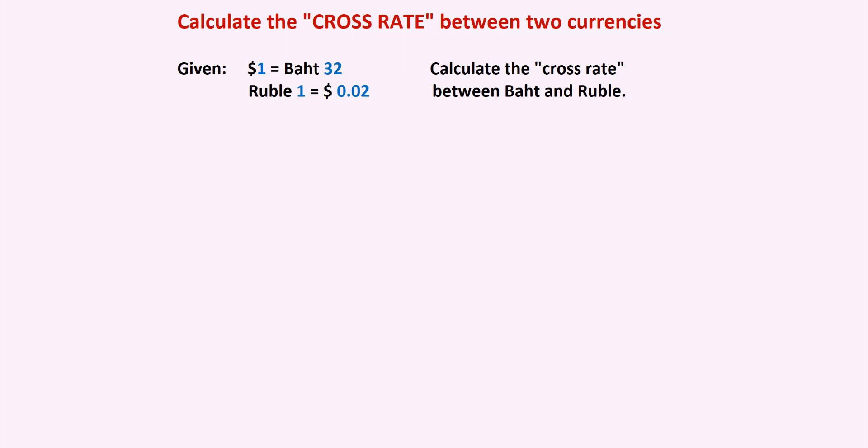This is my second example in which I'm calculating the cross rate between two currencies. What we are given here is the following: one US dollar equals 32 Thai baht. Baht is the currency in Thailand.